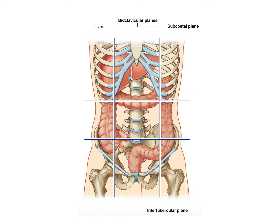There is another video about the location of the liver and the surface anatomy of the liver, but let me show you — this is the upper border of the liver and this is the lower border of the liver. As we mentioned, the liver is located inferior to the diaphragm, and it is protected by the lower ribs.